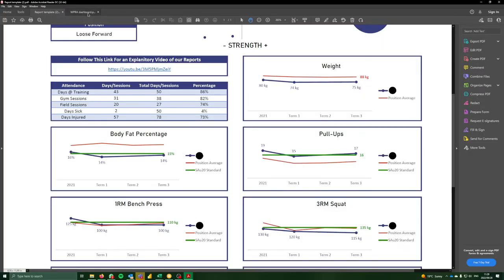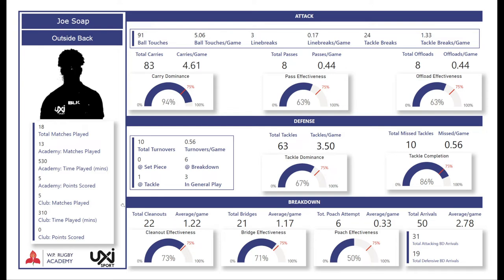That's it for the testing and gym data. Moving on to the match stats — this is a dashboard from the matches played. It's not always possible for a match to be filmed, and if it's not filmed it doesn't form part of the stats. So if your player participated in games that weren't filmed and couldn't be coded, they won't be counted. Joe Soap has played 18 games in total: 13 matches for the academy and five for his club. At the top we have attack, in the middle defense, and at the bottom breakdown.